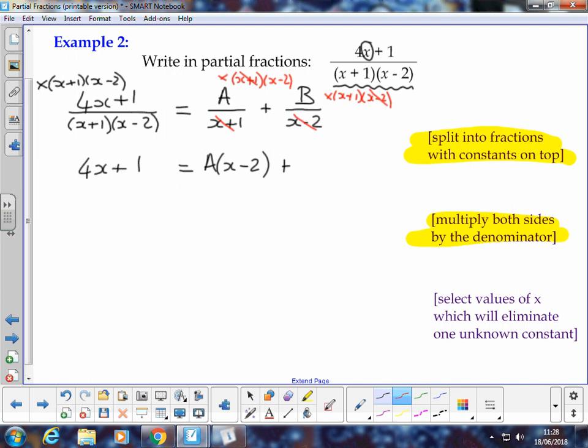then in this case here, the x minus 2 terms simplify, and we're left with B multiplied by x plus 1.